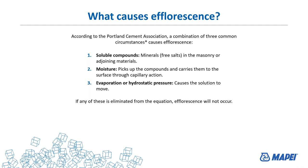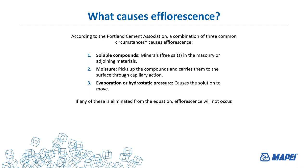There's an asterisk on those circumstances because a fourth circumstance can also contribute: cool, sustained temperatures below 50 degrees — actually starting in the 40s. That's why you'll see an uptick in efflorescence claims during the cooler months, especially in Florida. You can drive by a concrete or red brick wall and it'll all be fine, and then one day you'll see a white line running through it — just when temperatures have dropped from the 70s and 80s down to the 40s and 50s. That can be a triggering point. So three items are definitely needed: minerals, moisture, and evaporation — or temperature as a fourth trigger.